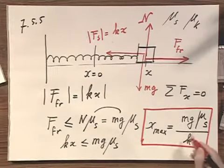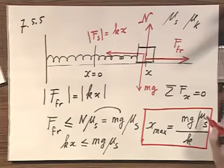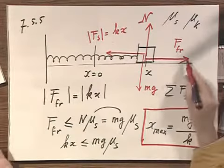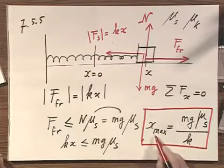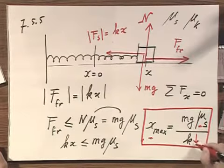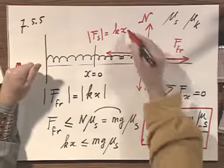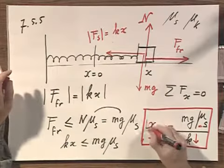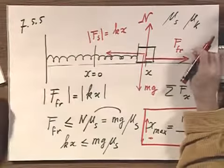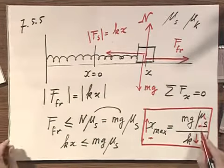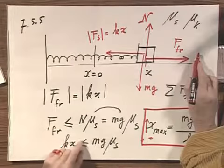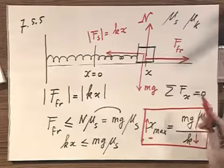Let's look at this result and see whether we can understand it qualitatively. First, if μs were zero, x maximum equals zero - that's immediately obvious. If there were no friction at all, there's no way you could move it to any distance; it starts to slide immediately. Suppose k is very small - the spring is very sloppy, the force is small, and so you can bring it out very far and still have equilibrium. It's also clear that if you increase the friction coefficient very high, you can bring it out much further so that it stays put.